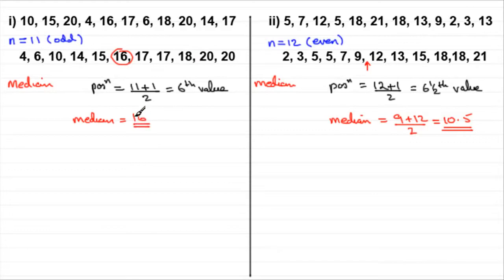So we have our median then for each set of data. Now I want to introduce you to another value called the lower quartile. The lower quartile is a value which is a quarter of the way in from the lower end of your list. The median was halfway in, the lower quartile is now a quarter of the way in. And we call this value Q1, the first quartile.